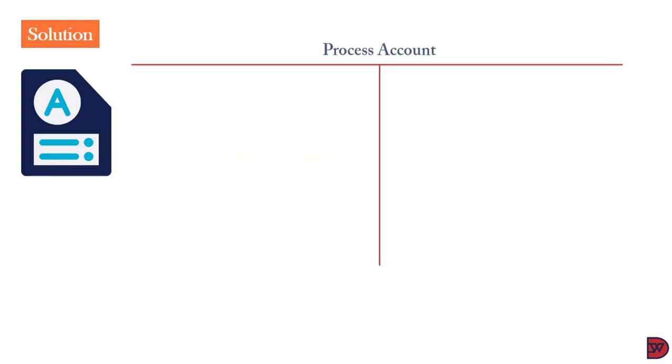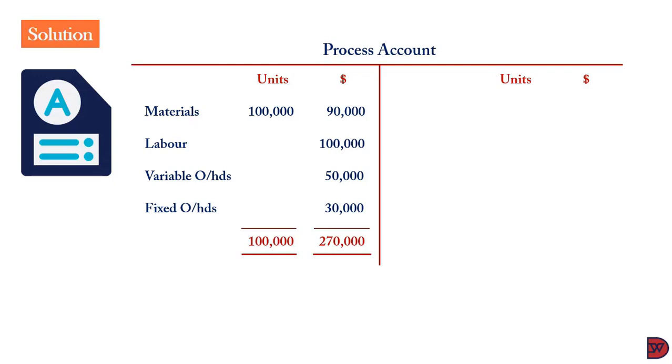When we come to the process account, the debit will put the materials: 100,000 units, originally intended as the outcome, $90,000. Labor being $100,000. Variable overheads $50,000. Fixed overhead $30,000. Leading to a total input unit of 100,000 and the cost of $270,000.